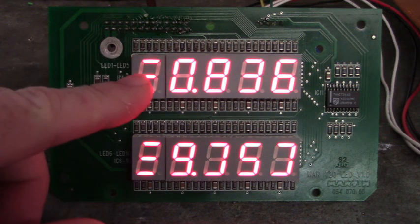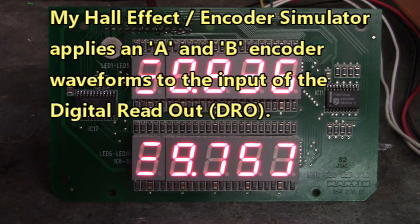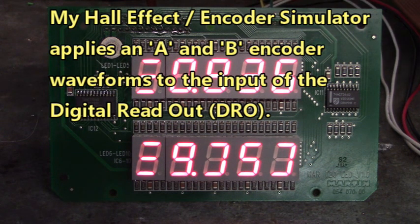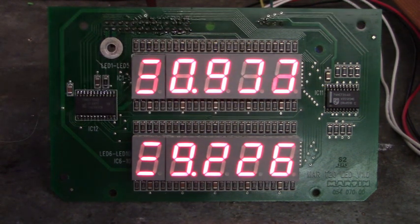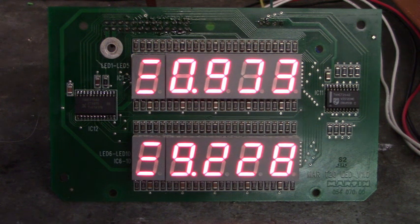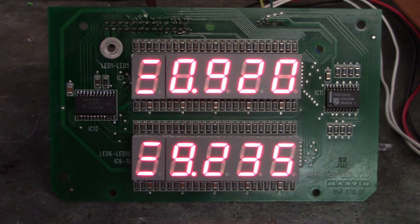Up here these segments are flickering. I've got my hall effect encoder simulator over here. Let me program that and it should start counting, but look how it counts. That's not right. We have to go into the control board and see what's going on.